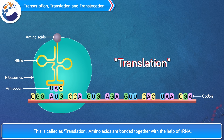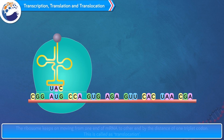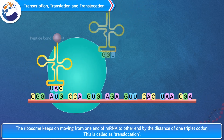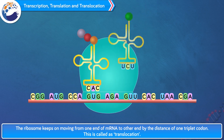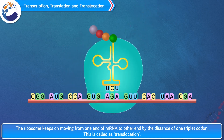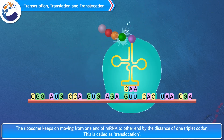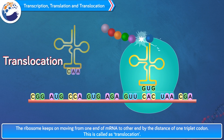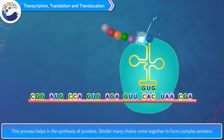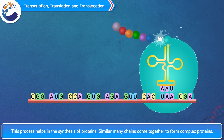Amino acids are bonded together with the help of rRNA. In this process, the ribosome keeps on moving from one end of mRNA to the other end by the distance of one triplet codon. This is called translocation, and this process helps in the synthesis of proteins. Many such chains come together to form complex proteins.